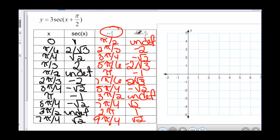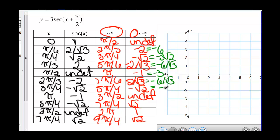Now we need to multiply these values by 3. So we get negative 6, negative 3 square root of 2, negative 6 over square root of 3, negative 3, negative 6 over square root of 3, negative 3 square root of 2, undefined, 3 square root of 2, 3, and 3 square root of 2.